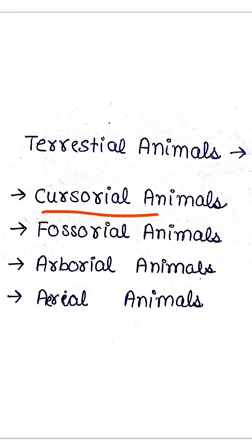For example, a dog, a horse, and a cockroach. Fossorial animals are those animals which live in burrows, for example rabbits. Arboreal animals are those animals which live on trees, for example monkeys.